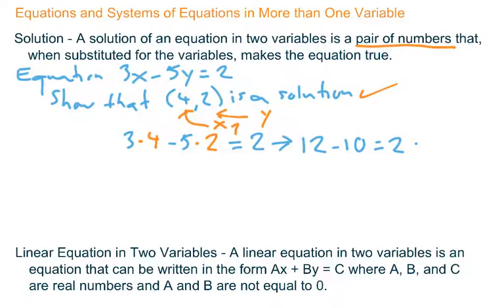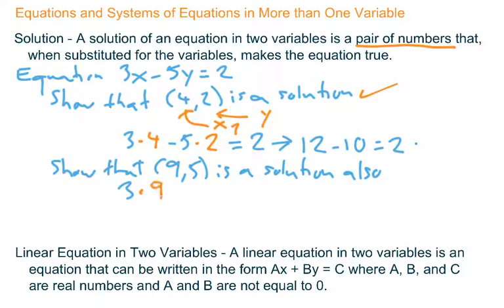Let's look at another ordered pair. Same equation, but just a different ordered pair. Show that the ordered pair (9, 5) is a solution also. Well, that's interesting because equations in one variable often don't have a lot of solutions. Let's see what happens here. So if I substitute the 9 for the x and the 5 for the y, does that equal 2? Put a little question mark right here, and let's check that one out. 3 times 9 is 27. 27 minus 25, 5 times 5 is 25. 27 minus 25 is 2. Great. So that's the solution as well.